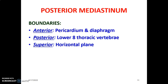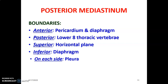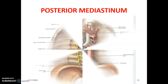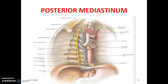Regarding the posterior mediastinum boundaries: posteriorly you have the lower eight thoracic vertebra from T5 to T12; superiorly is the horizontal plane from the sternal angle of Louis to T4-T5 junction; inferiorly is the diaphragm; while on each side you have the pleura, which forms the lateral boundaries of the mediastinum.